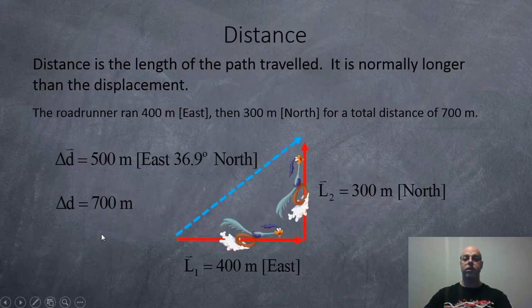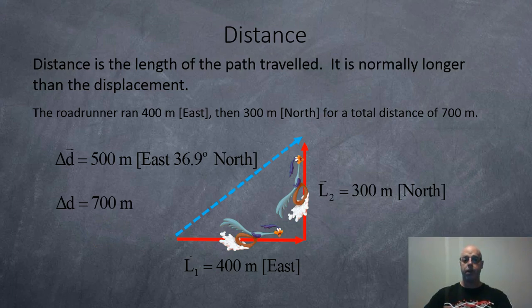Distance. Distance is the length of the path traveled. It is normally longer than the displacement. So for example in this case here we got a roadrunner. The roadrunner travels 400 meters to the east. Makes a sharp turn and goes 300 meters to the north. That's a total distance of 700 meters. Where if it had taken the displacement, the shortcut, it would have only traveled 500 meters heading east and then rotating up at 36.9 degrees to the north.